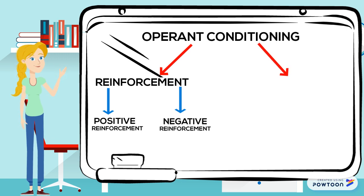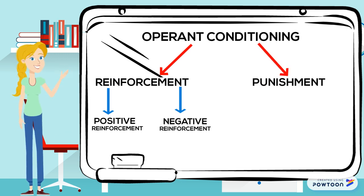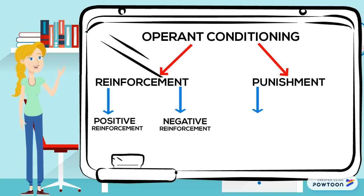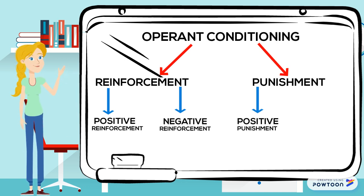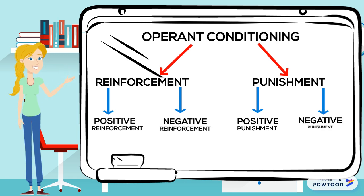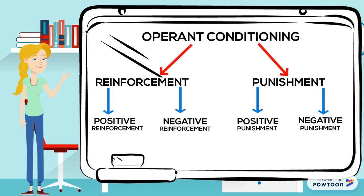The other way is through punishment, which decreases the rate of undesired behaviours from occurring again. Positive punishment is where a punishment is added to decrease behaviour. Negative punishment is when something desirable is taken away to decrease behaviour.